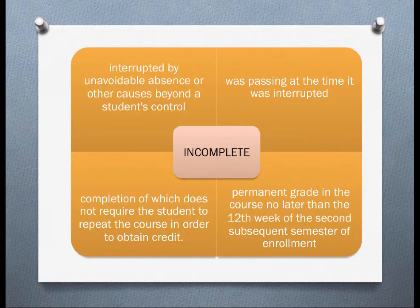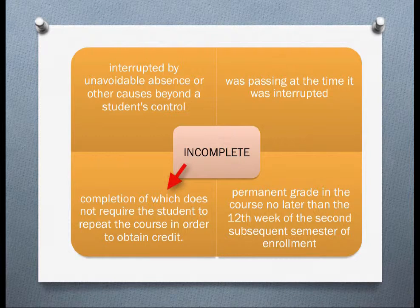An Incomplete, which is no grade, is a record of work which was interrupted by unavoidable absences or other causes beyond a student's control, where the work was passing at the time it was interrupted, and the completion of which does not require the student to repeat the course in order to obtain credit. The student must achieve a permanent grade in this course no later than the 12th week of the second subsequent semester of enrollment, or the grade will revert to a failing grade.